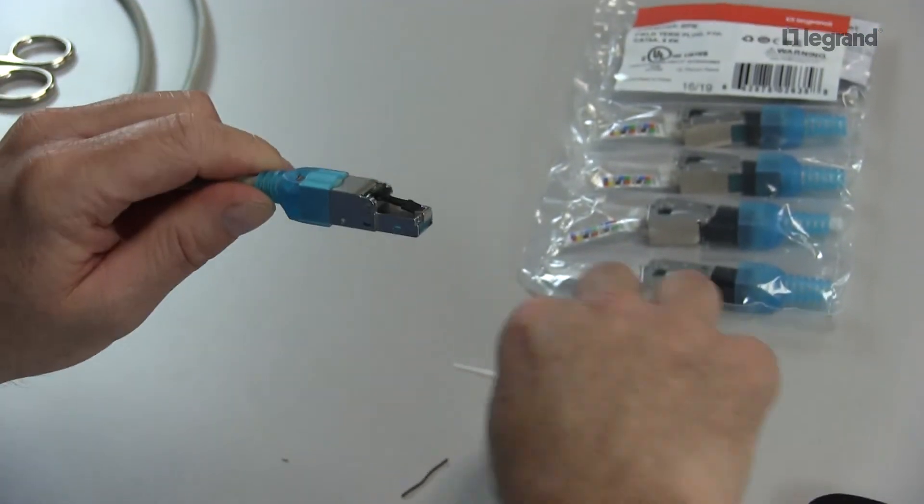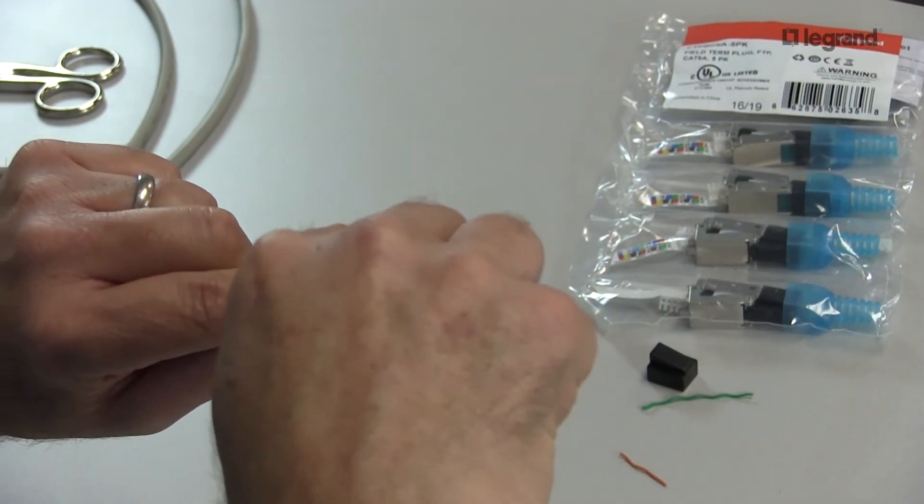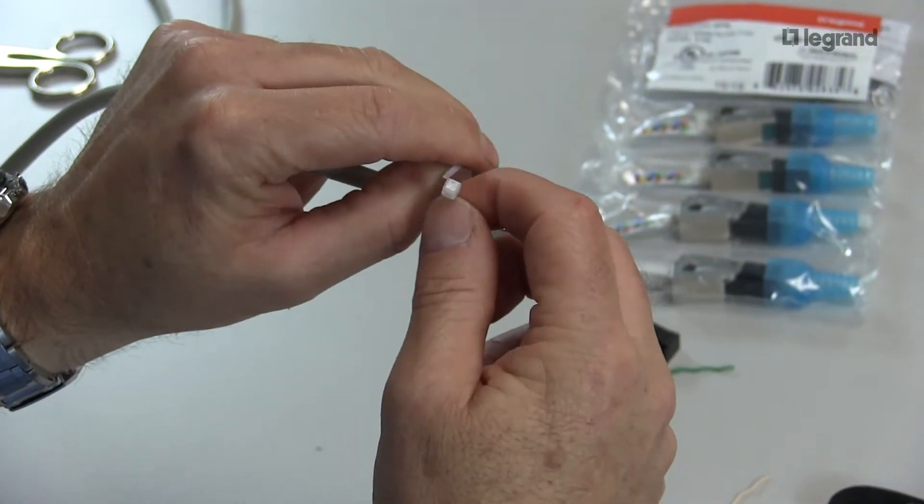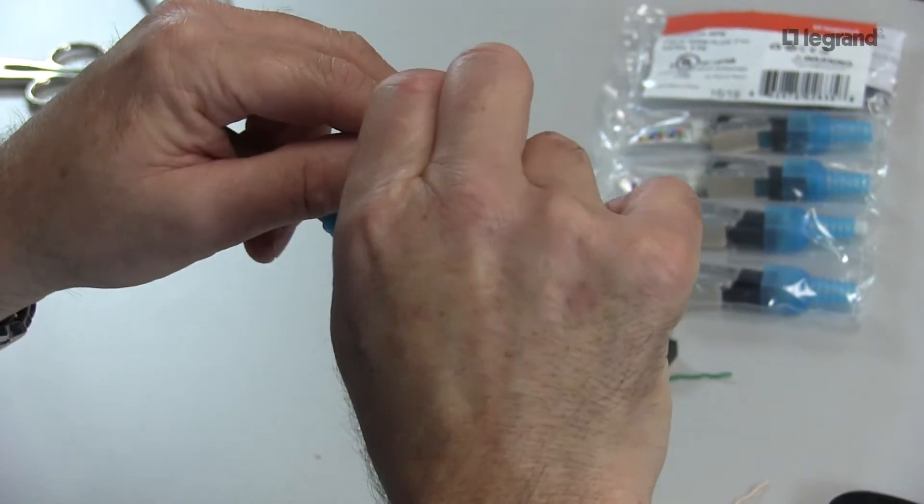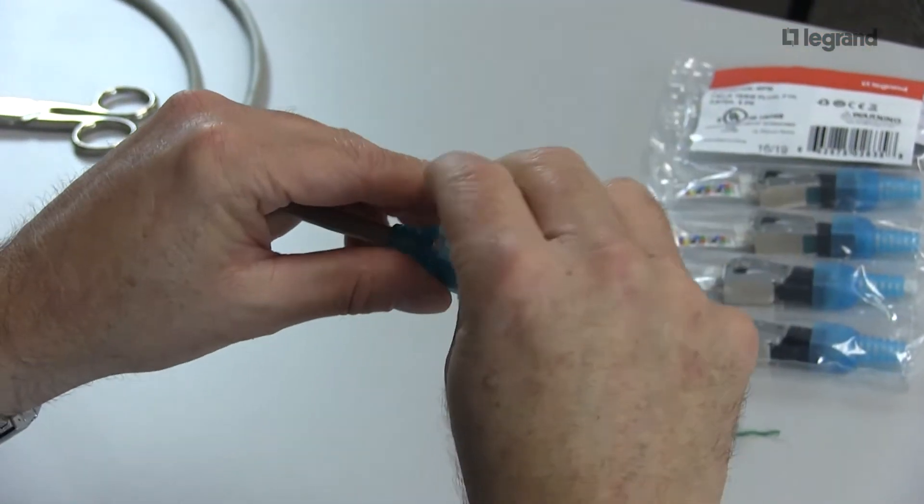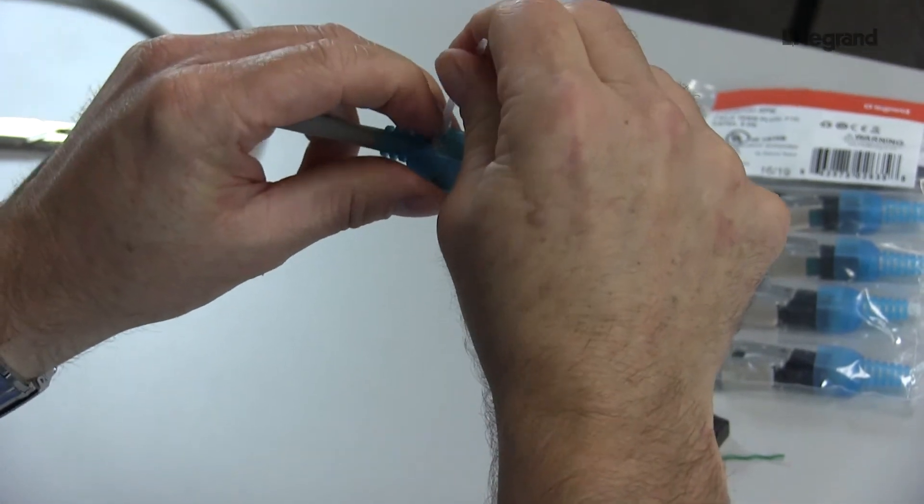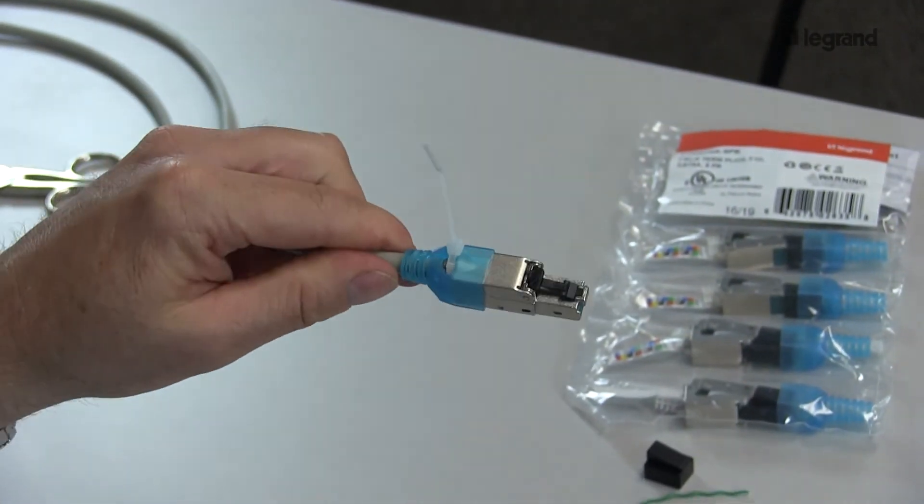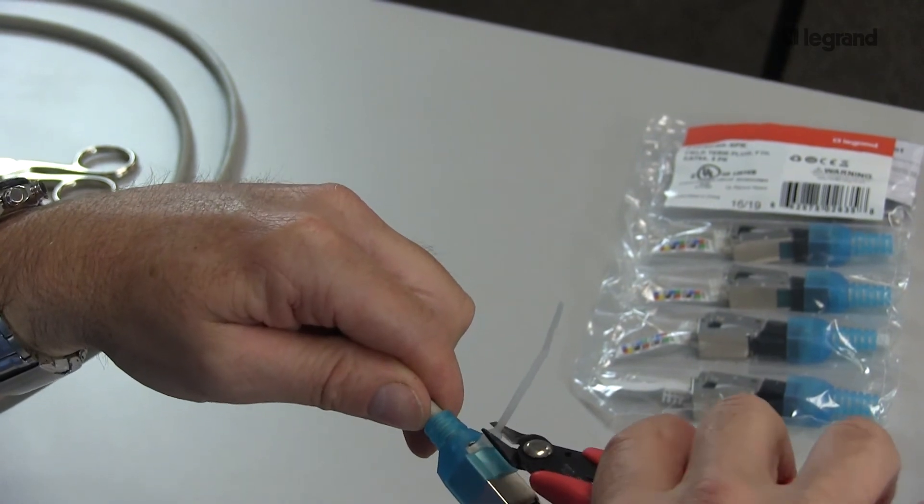There is a little tab right here. Last thing you are going to do is slide your zip tie through and snug it up. Trim that off.